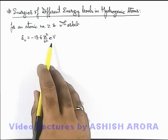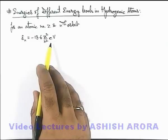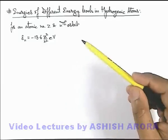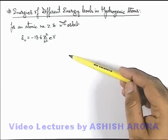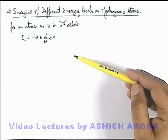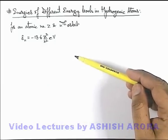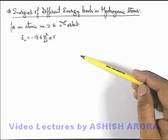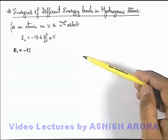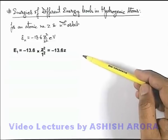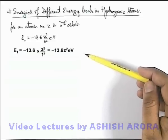Now using this formula we can easily calculate the energies of different energy levels or orbits. Let's have a look at this. If we talk about n equals 1, on substituting the value of n equals 1, the energy of first orbit we are getting is E1 equals minus 13.6 Z squared electron volts.